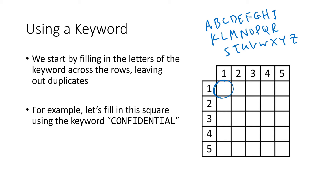So we write C, O, N, F, I, D, E — then there's another N, but I've already used N, so I skip it and go to T. There's another I, but I already have I, so I skip that too. Then A and L. I cross out each letter as I use it so I don't accidentally duplicate any. Then I fill in the remaining letters in alphabetical order: B, G, H, K, M, P, Q, R, S, U, V, W, X, Y, Z.